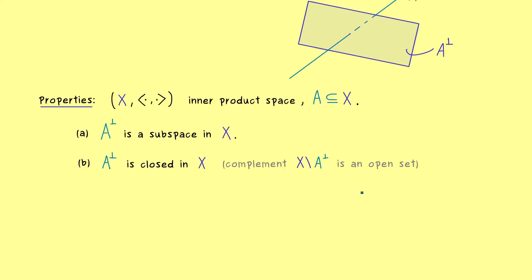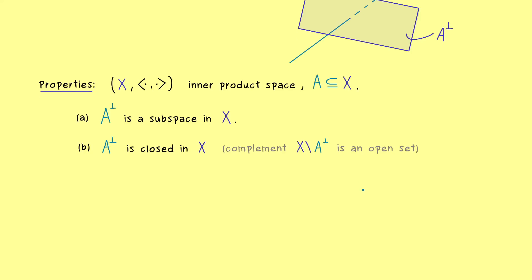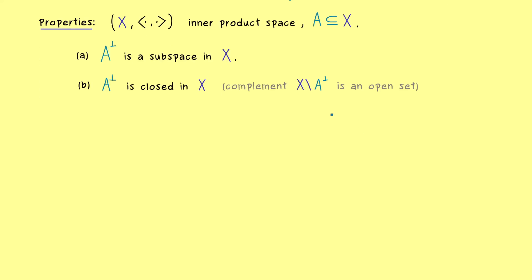If you need more information there, you should check out my functional analysis course, where we discuss exactly that at the beginning. With that in mind, we can also ask if taking the closure of a set A changes anything in our orthogonal complement — and the answer is no, it does not change anything, we still get out A-perp. Similarly, if we go to the linear subspace spanned by A, which might be bigger, the orthogonal complement does not change either — we still get out the same orthogonal complement.